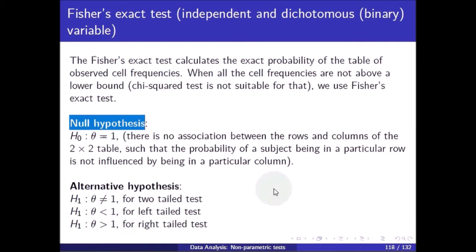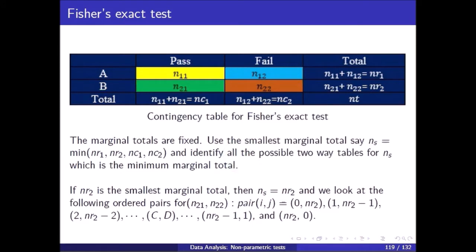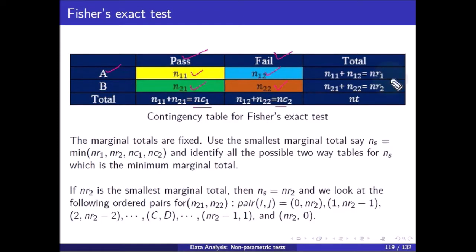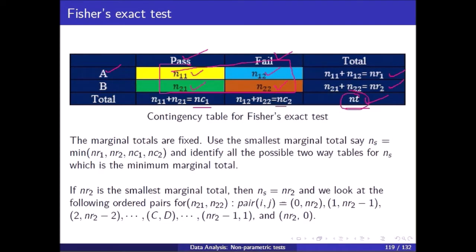In the two-by-two table: section A pass is n11, section A fail is n12, section B pass is n21, section B fail is n22. Adding n11 plus n21 gives nc1; n12 plus n22 gives nc2. Adding n11 plus n12 gives nr1; n21 plus n22 gives nr2. Adding nr1 plus nr2 gives nt, equivalently nc1 plus nc2, or all four cell values n11 plus n12 plus n21 plus n22.